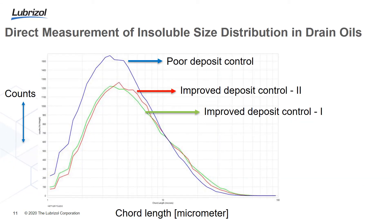Here I'm showing direct measurements of insoluble size distribution in those three drain oils by ParticleTrack. The Y-axis shows count number and X-axis shows chord length in micrometers. The micrometer size regime shows highly aggregated particles — primary particle size is typically 20 to 40 nanometers based on TEM analysis. These small primary particles aggregate into micrometer-size aggregates, and in the poor deposit control case, we see significantly more counts of aggregated particles, indicating the oil couldn't handle aggregate formation compared to the improved deposit control cases.